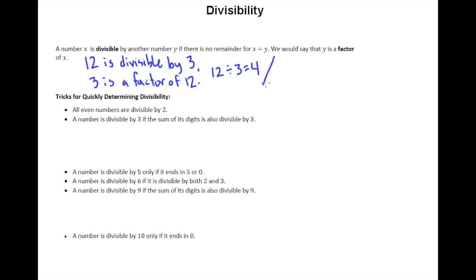To give a counterexample let's talk about 13 and 4. So 13 is not divisible by 4. Also 4 is not a factor of 13. And why are both of these statements true? Well because if you try to divide, 4 would go into 13 three times. But what we would end up with is a remainder of 1. And so since there's a remainder when you divide those numbers, 13 is not divisible by 4 and 4 is not a factor of 13.